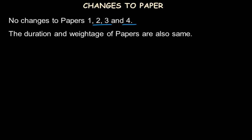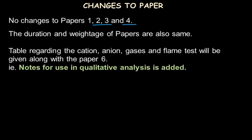Regarding changes to question papers — there are no changes to Papers 1, 2, 3, and 4, which are the MCQ and subjective main papers for core and extended. There is no change in duration, weightage, or the grading system. However, there is a small change to Paper 6, the Alternative to Practical paper, where notes for the use of qualitative analysis — including a table for cation and anion tests — are added.